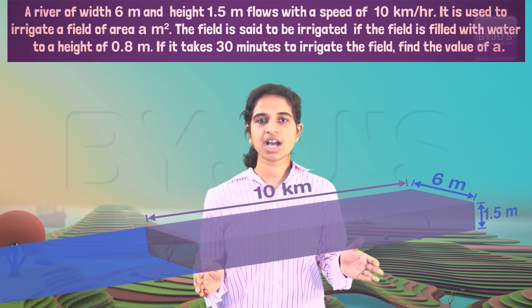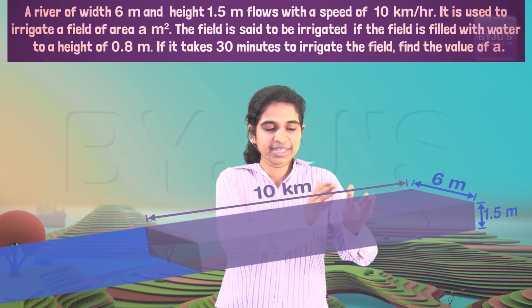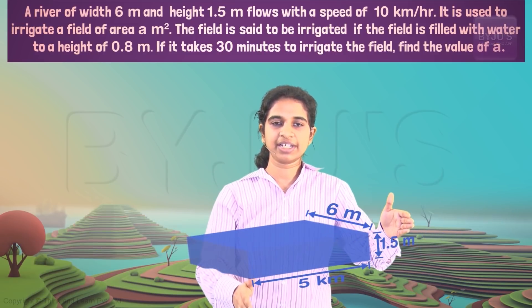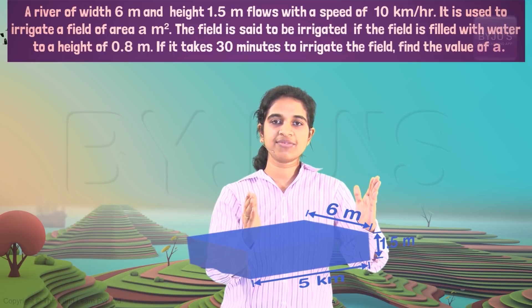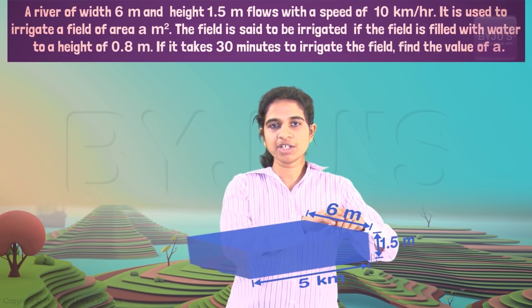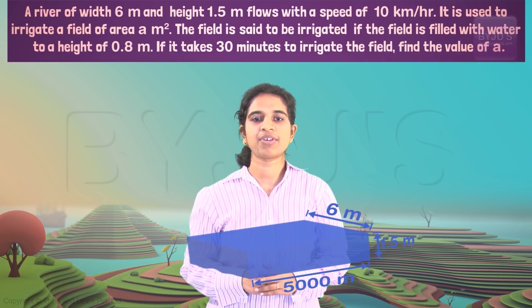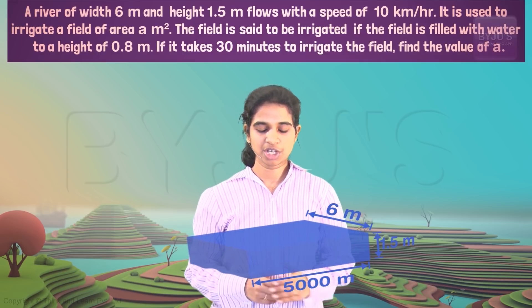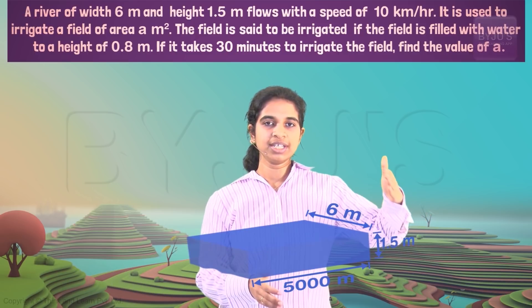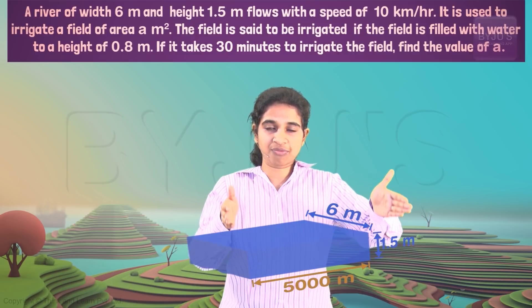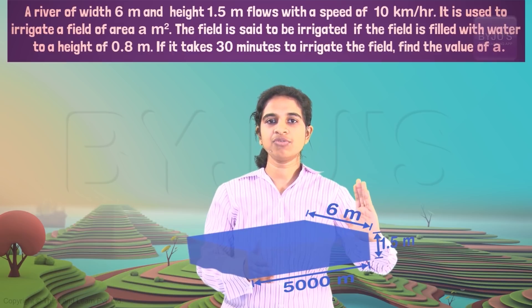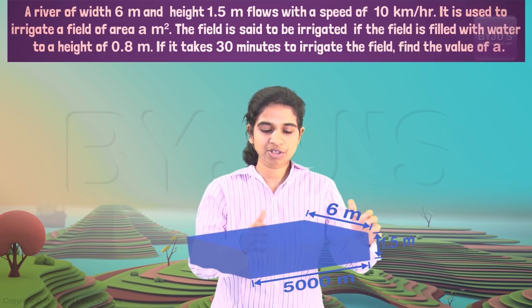In half an hour it covers five kilometers — half of 10. So we can cut the continuous river and take a length of five kilometers. All other dimensions are in meters, so five kilometers is 5000 meters. Now we have a cuboid of water with length 5000m, breadth 6m, and height 1.5m.